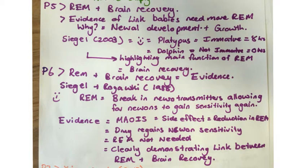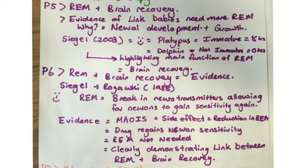In paragraph five, we're going to be looking at REM and brain recovery. Evidence for this comes from looking at babies, who generally need more REM sleep because neural pathways are forever developing and there is substantial growth happening. Siegel in 2003 provides supporting evidence: platypus, who are considered immature at birth, need 8 hours of REM sleep a day, while dolphins, who are not considered immature at birth, need 0 hours of REM sleep a day — highlighting that the main function of REM sleep is brain recovery.